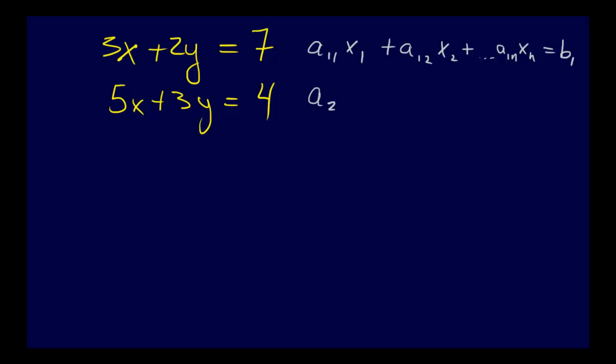We say a21x1 plus a22x2 plus, and so forth, a2nxn equals b2. And we go all the way down to an1x1 plus an2x2 plus, all the way to anxn equals bn.